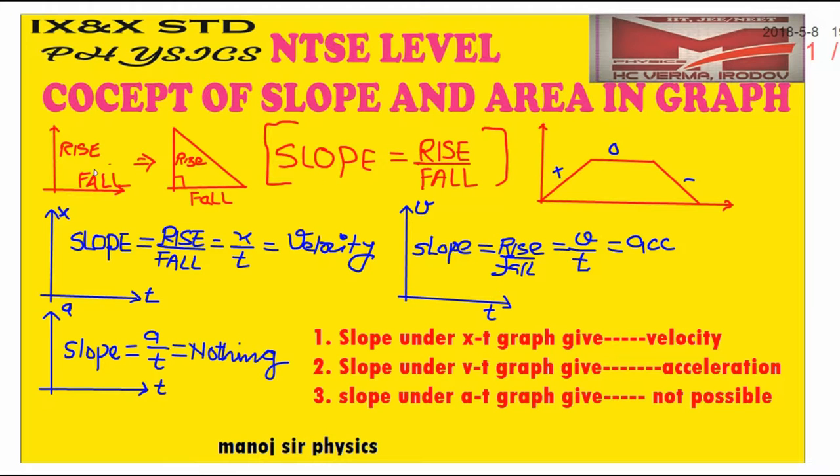Then slope can be written as rise over fall. In case of a graph or triangle, this is rise, and this base is called fall. So slope is rise over fall in a right angle triangle.